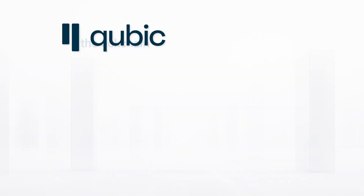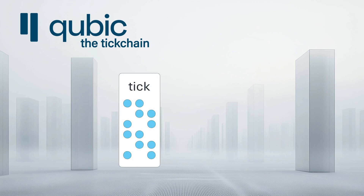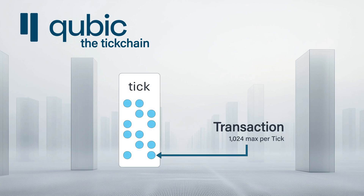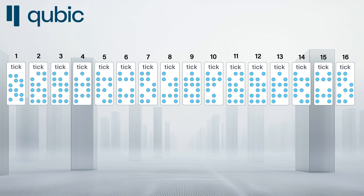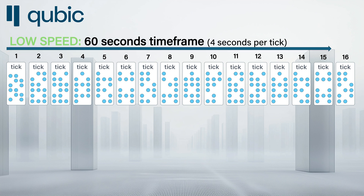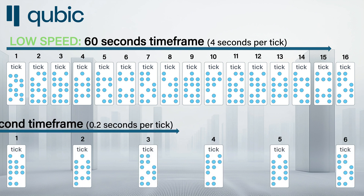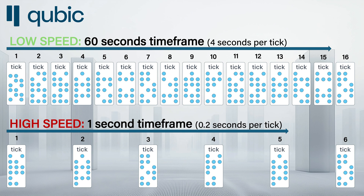In Cubic there are no blocks filled with transactions — there are ticks. Each tick gets filled with a maximum of 1024 transactions. Ticks post constantly within a time set by the protocol. As of today, Cubic ticks once every four seconds. The tick chain is currently running in its first gear, because this is what is currently required. As requirements and chain use go up, it can be accelerated to post up to five ticks per second.